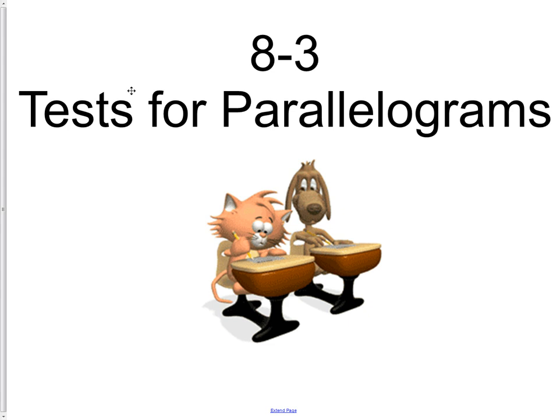In today's lesson we're going to discuss the tests for parallelograms — what characteristics are present in a quadrilateral that make it a parallelogram. In the previous lesson we learned that if we knew it was a parallelogram, certain relationships exist. Now we're going to learn that if we have some properties existing, then we know the object is a parallelogram.